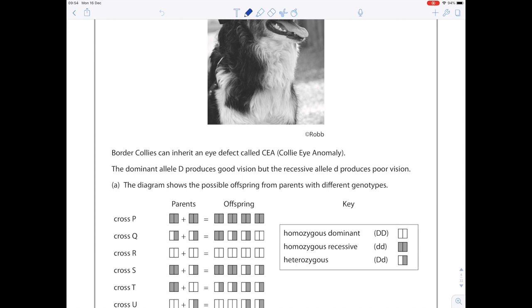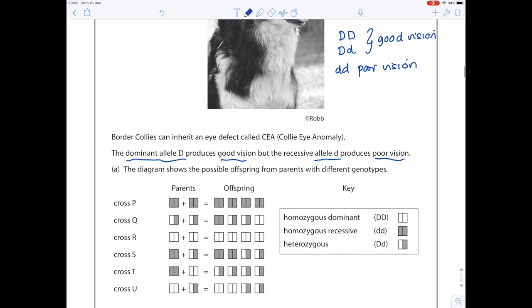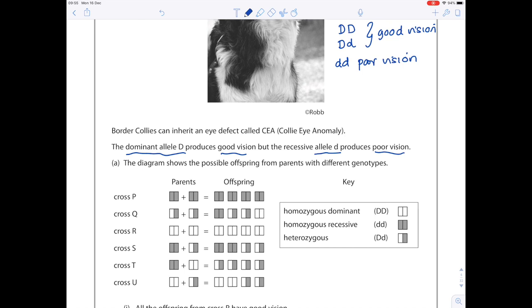Let's have a look. This is key here: the dominant allele D produces good vision and the recessive allele d produces poor vision. Let's just write a combination of what would produce good vision and what would produce poor vision. It tells me in the question, and we've even got a key. Cross P has two homozygous recessive parents, meaning all the offspring have the same genotype, so they're going to have poor eyesight according to my notes above.